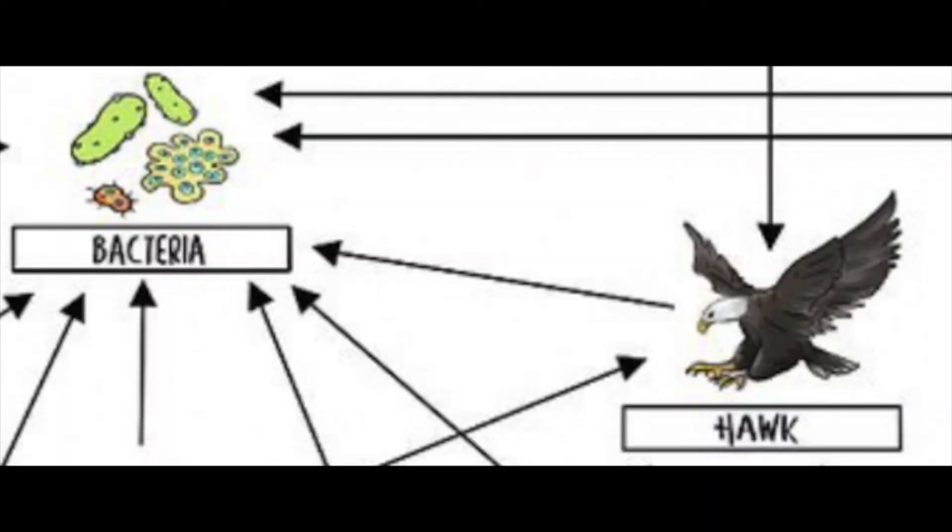But you'll notice that once all of these organisms pass away and become dead organic material, they are going to be consumed again by that decomposer — that bacteria. That is why the hawk then has an arrow pointed to bacteria.